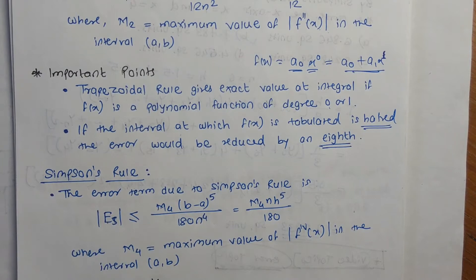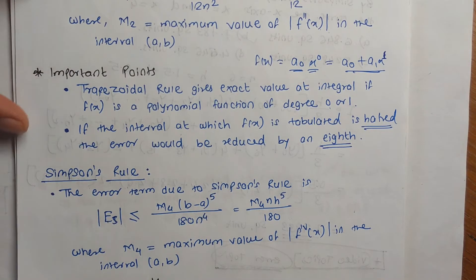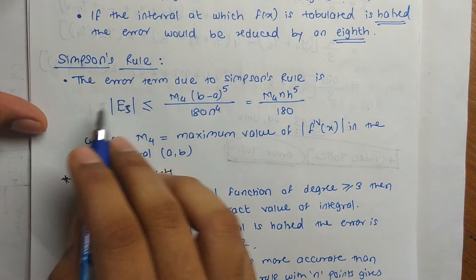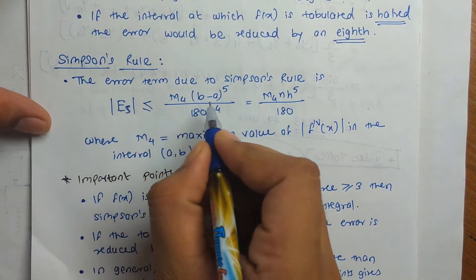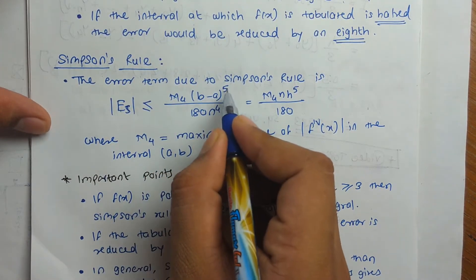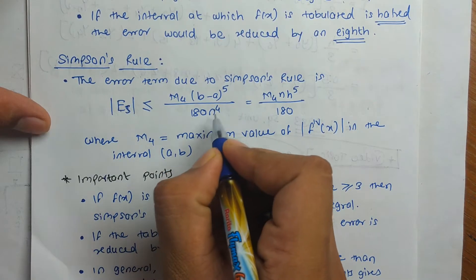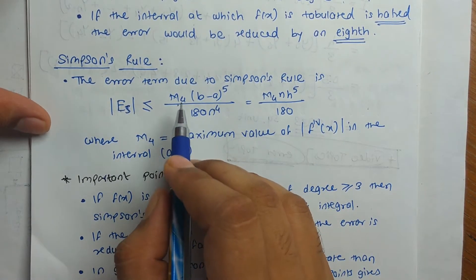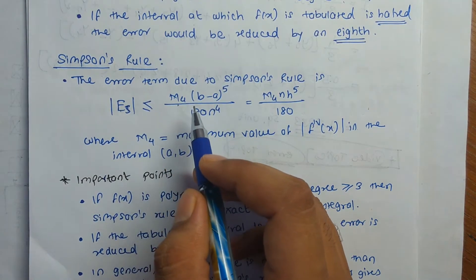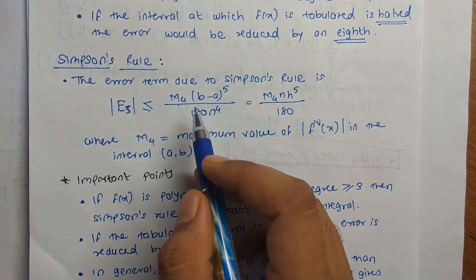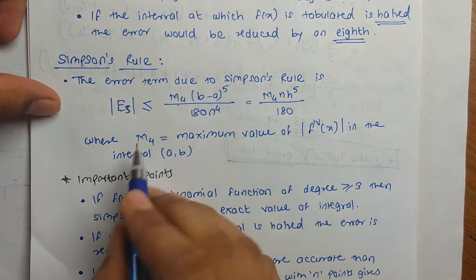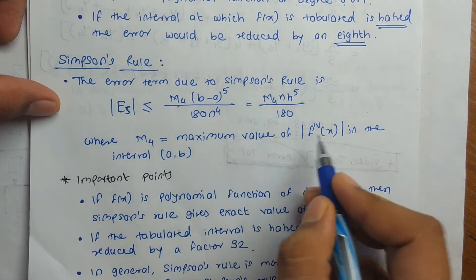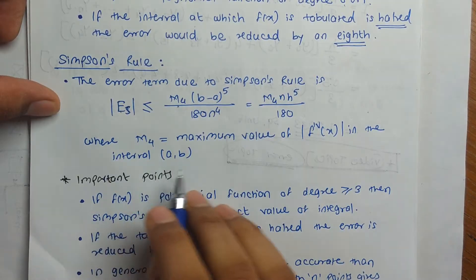Next, we look at Simpson's rule. The error due to Simpson's rule is: M4 × (b − a)⁵ / (180n⁴). Here M4 means the fourth derivative — we have to find the maximum value of the fourth derivative of the equation in the interval [a, b].